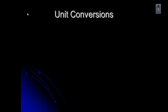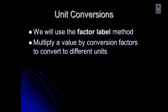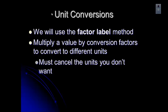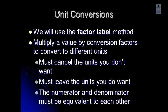We're going to use what's called the factor label method. What happens is we multiply a value by conversion factors and that lets us convert it to different units. What we want to do is cancel the units we don't want and leave the units that we do want. When we use a conversion factor, the numerator and the denominator of that conversion factor need to be equal to each other — so one yard equals three feet.